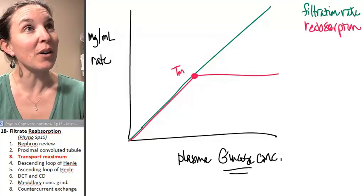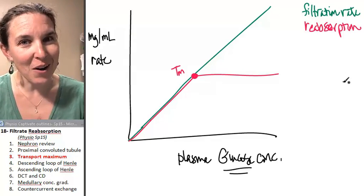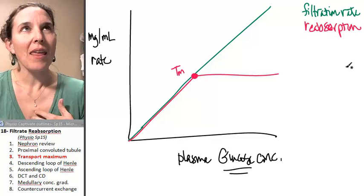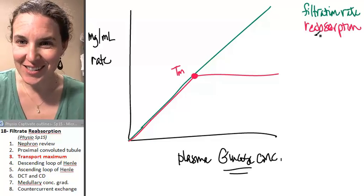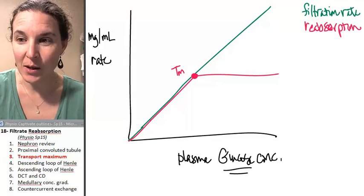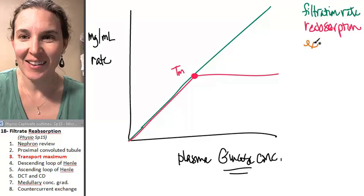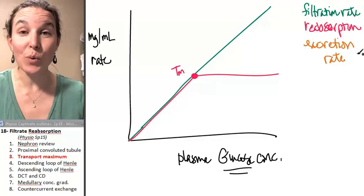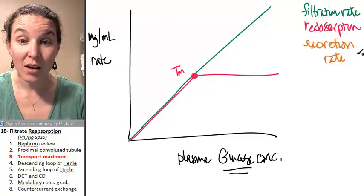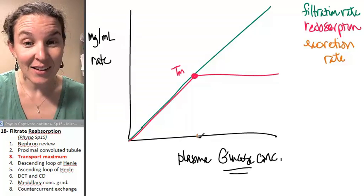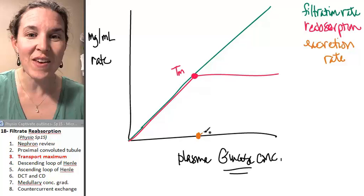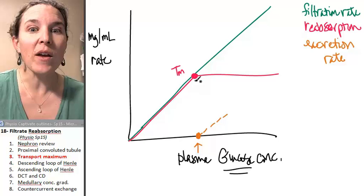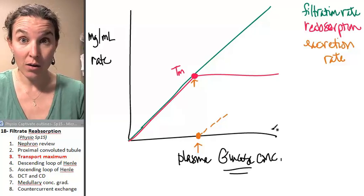Speaking of peeing out glucose, if you do not reabsorb glucose, what if we talked about excretion rate? I'm going to make it orange because that way you know that we're talking about pee now. Excretion rate. Do we ever excrete glucose? Unless suddenly we can no longer, we've hit transport maximum. Plasma glucose levels are so high that we've overwhelmed our transporters.